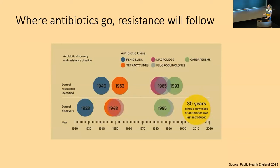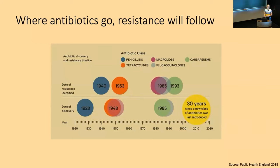Since penicillin, a bunch of different classes of antibiotics have been discovered. Looking at the date of discovery alongside the date of antibiotic resistance identified, you can see that where antibiotics go, resistance will follow. We're currently in what is referred to as a discovery void, where we haven't identified many new classes but have been making modifications to existing classes, where there's already widespread and easily evolvable resistance.